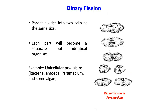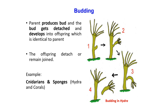In binary fission, the parent divides into two cells of the same size, each becoming a separate but identical organism. Examples include unicellular organisms such as bacteria, amoeba, paramecium, and some algae. In budding, the parent produces a bud that gets detached and develops into offspring identical to the parent. The offspring may detach or remain joined. Examples include cnidarians and sponges.